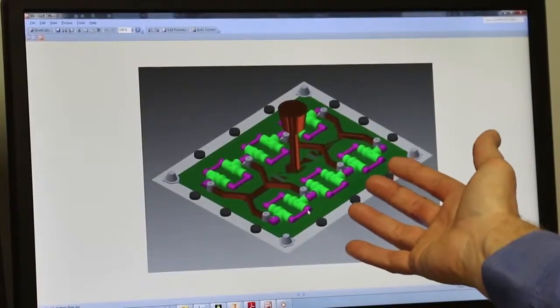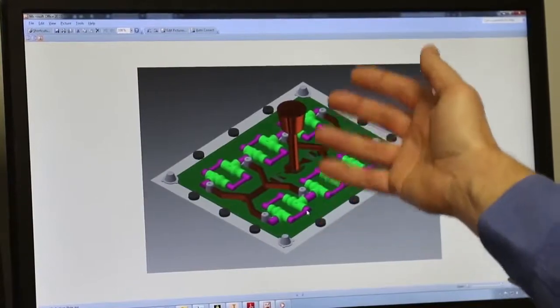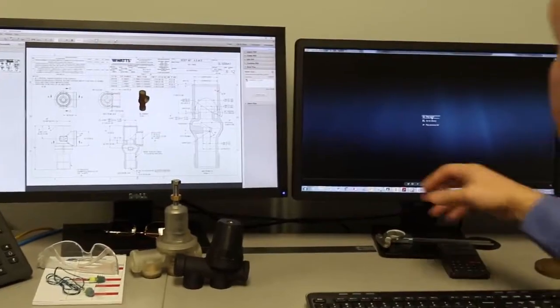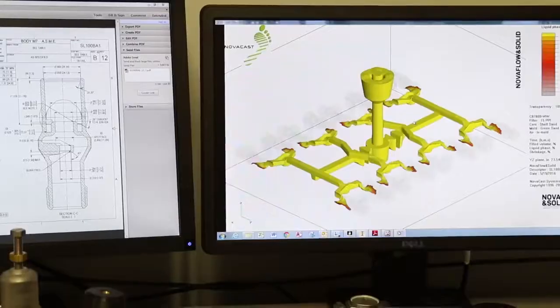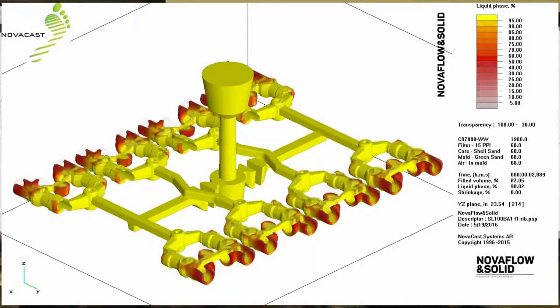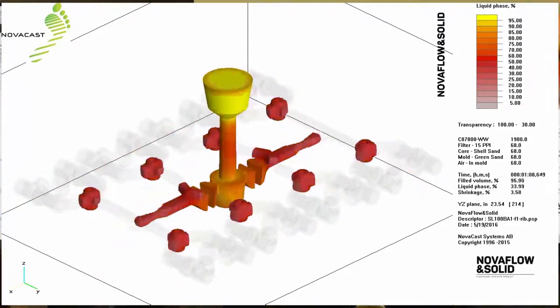We can create the tooling that's needed in order to produce it. And we can also use flow software so we can analyze the molten metal. So this is some really neat 21st century software that actually mimics the molten metal being poured into that mold.